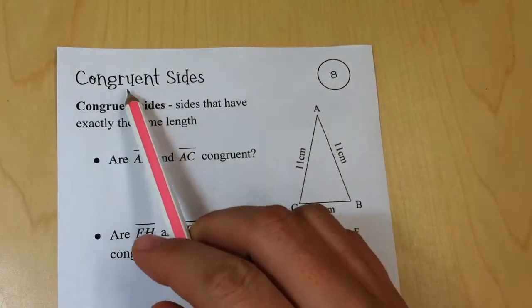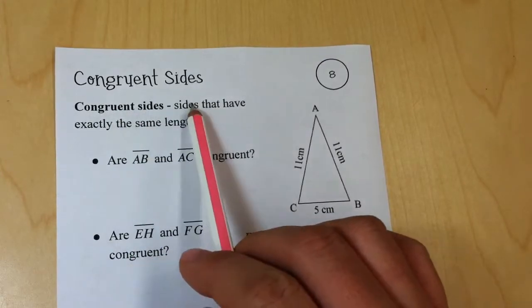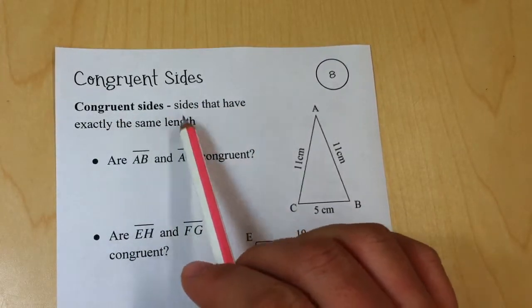For page 8 of our notes, we're looking at congruent sides or congruent side lengths. Congruent sides are sides that have exactly the same length.